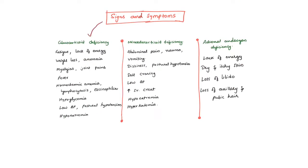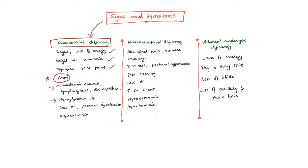The signs and symptoms seen in patients because of glucocorticoid deficiency include fatigue, lack of energy, weight loss, anorexia, muscle pains, and fever — remember, fever can be seen in Addison's disease. There is also normocytic normochromic anemia, lymphocytosis, and eosinophilia, which are because of steroid deficiency. Hypoglycemia occurs because cortisol is necessary for gluconeogenesis, and cortisol deficiency — especially in children — makes them more prone to develop hypoglycemia attacks.